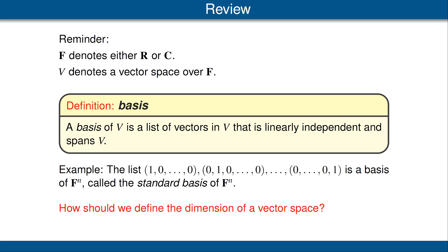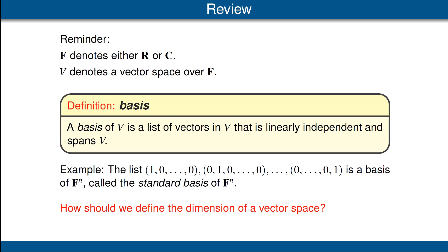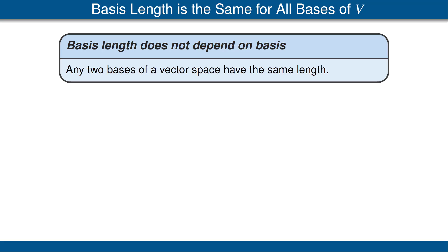However, there's one potential big problem with that definition. We see above a basis for Fⁿ — the standard basis — but there are an infinite number of other bases for Fⁿ. Suppose that not all these bases have the same length. Then we would have a real problem defining the dimension as the length of a basis list. Fortunately, that does not ever happen, which is the content of our next theorem — the theorem that will allow us to define dimension carefully. The theorem states that any two bases of a vector space have the same length.